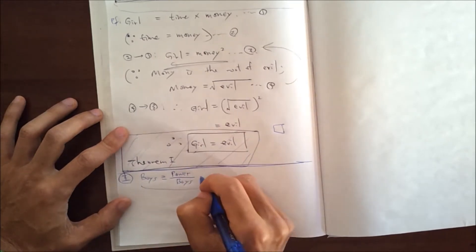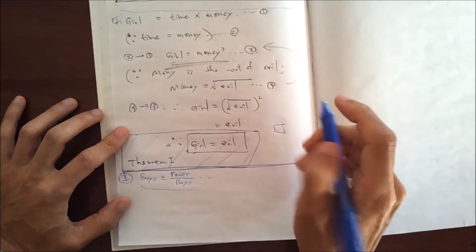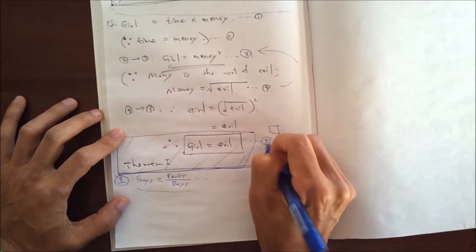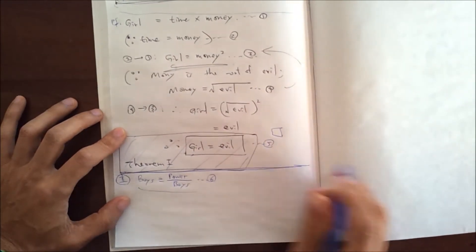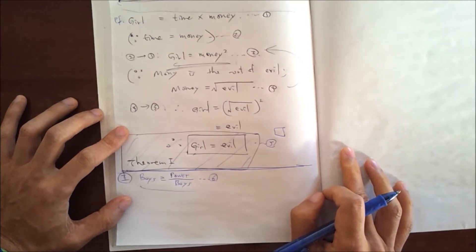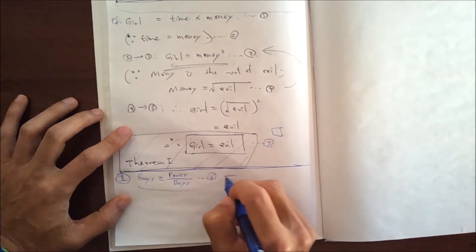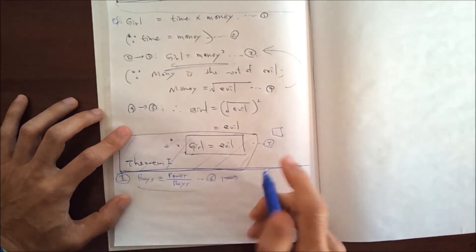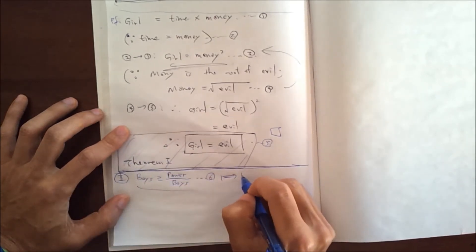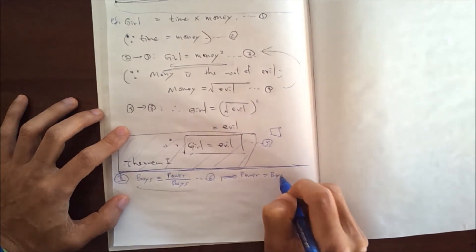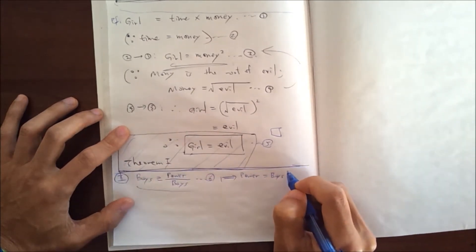That's basically it. I used equations 1 through 4, so let's say this one is equation 5 and this one is equation 6. If you rewrite this one, power and boys go to the other side, then power becomes boys times boys — so it becomes nothing more than boys squared.